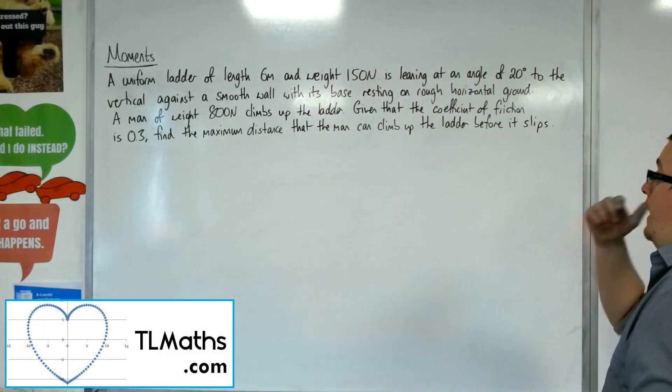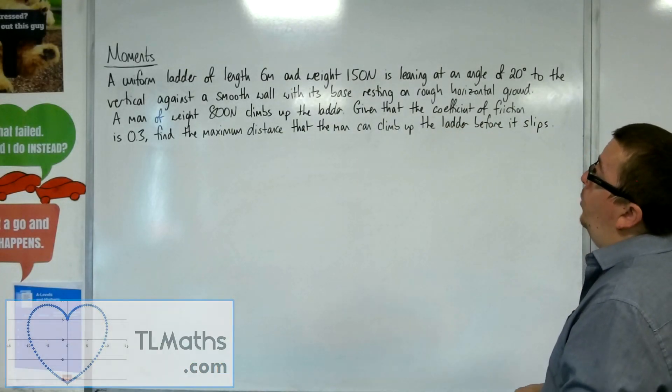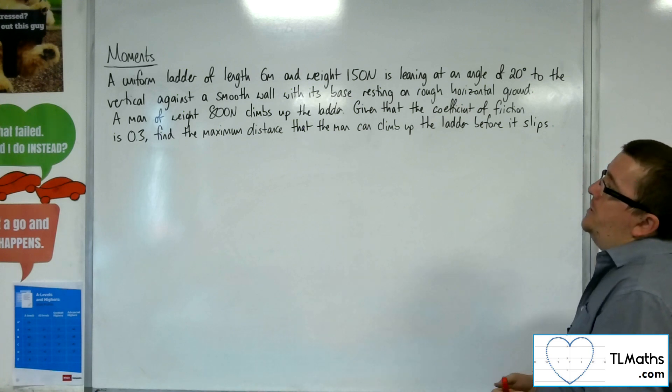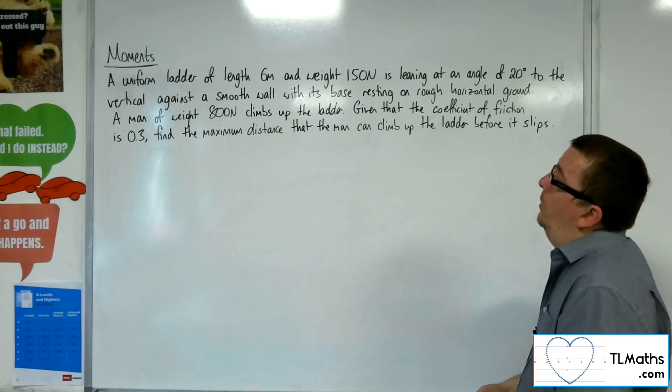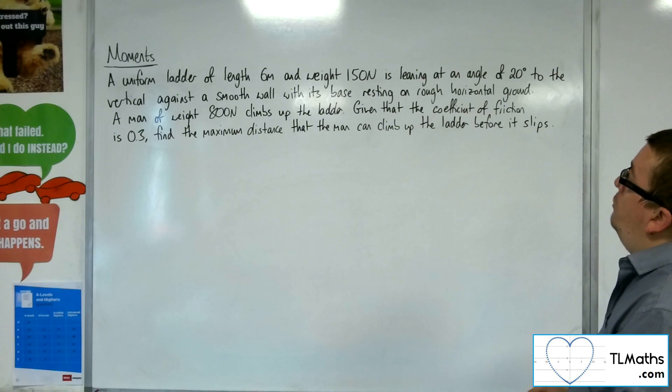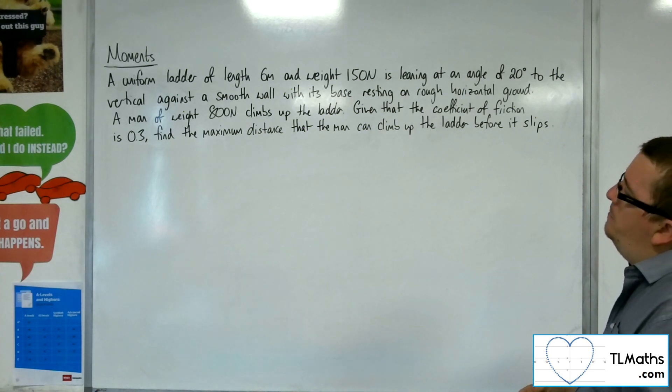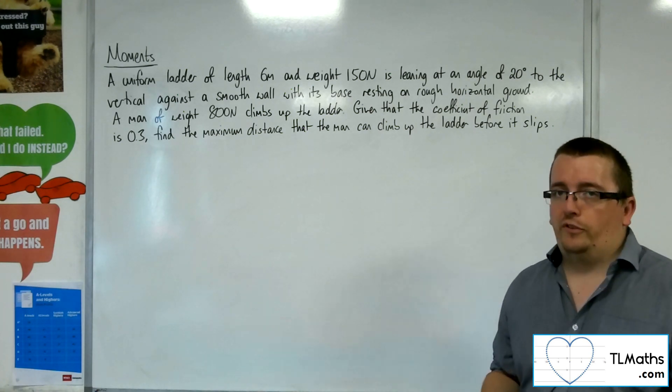In this video we've got a uniform ladder of length 6 meters and weight 150 newtons. It's leaning at an angle of 20 degrees to the vertical against a smooth wall with its base resting on rough horizontal ground. A man of weight 800 newtons climbs up the ladder. Given that the coefficient of friction is 0.3, find the maximum distance that the man can climb up the ladder before it slips.